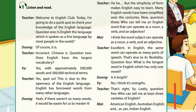Question 2: Does English have the largest vocabulary? Yes, with approximately 500,000 words and 300,000 technical terms. Spot on. This is due to the openness of the English language. English has borrowed words from many other languages.